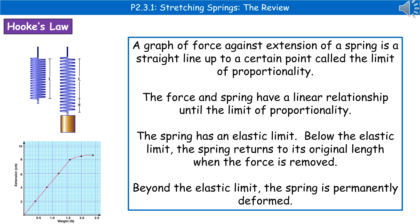Beyond the limit of proportionality, it's no longer a linear relationship. The reason for that is that our spring has an elastic limit. Once we go beyond the elastic limit, the spring is permanently deformed, which means that even after we remove the force, it won't go back to normal. Prior to the limit of proportionality, our spring will return to its original length when we remove the force.